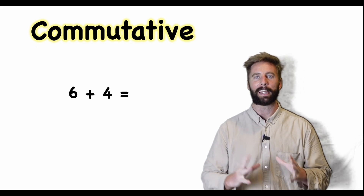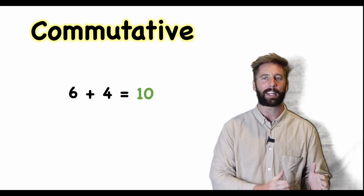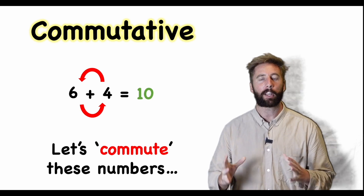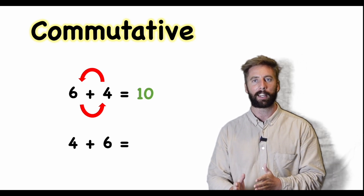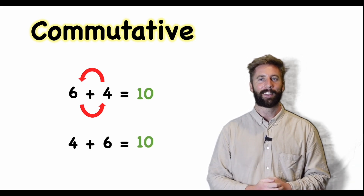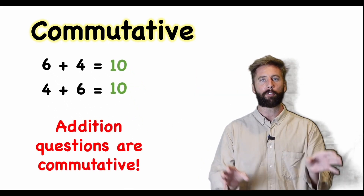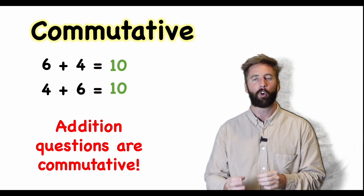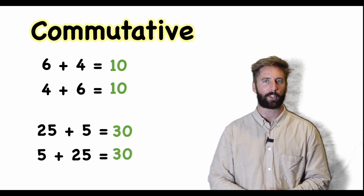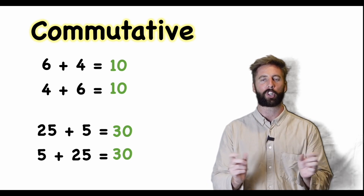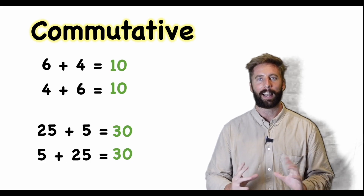Let's go very basic. Six plus four equals ten. But now if I commute — or move — these two numbers and have four plus six, I also get ten. So addition questions are what we call commutative. I can move the question around and have it six plus four or four plus six and I still get the same answer. That's the same with all addition questions — it doesn't matter which way around I put it.